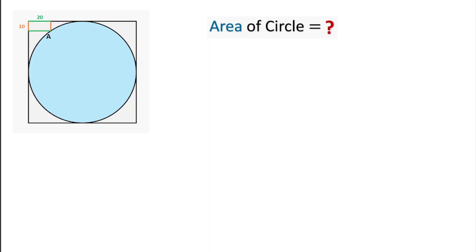Hello everyone, in this figure we can see that there is a square and inside this square one circle is embedded. Also, one rectangle is embedded whose dimension is 10 into 20, and this rectangle is touching the circumference of the circle at a point. Then we have to find the area of this circle.